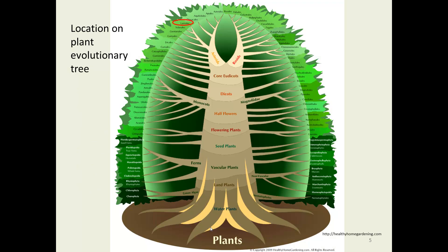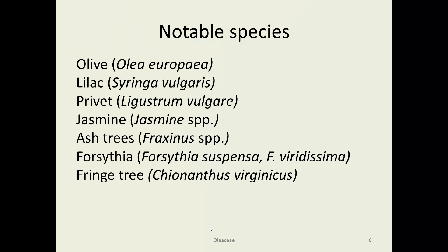This family is in the Lamiales in the asterid group. Notable species include olive (Olea europaea), lilac, privets, jasmine, ash trees, forsythia, and fringe tree (Chionanthus virginicus).